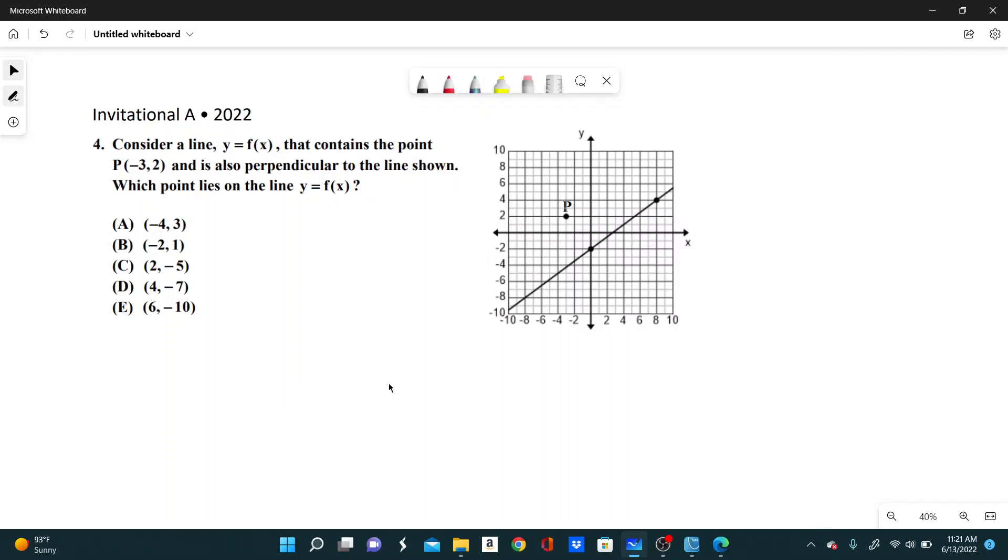Number four, consider a line y equals f of x that contains the point P and is also perpendicular to the line shown. Which point lies on the line y equals f of x?